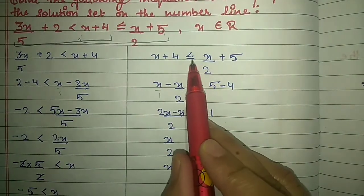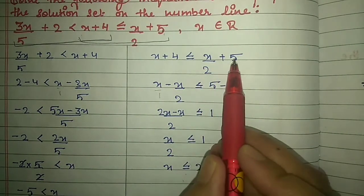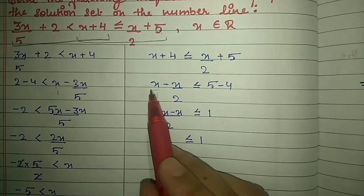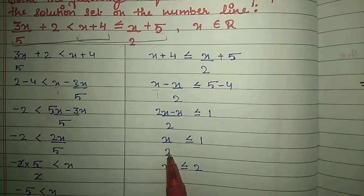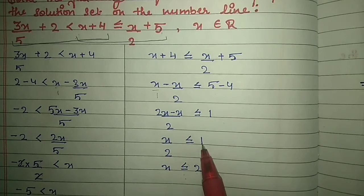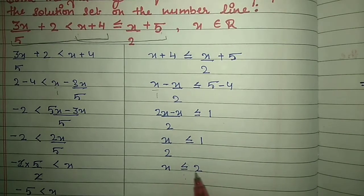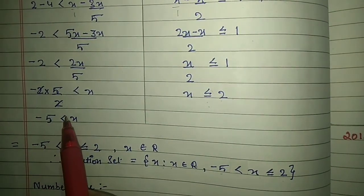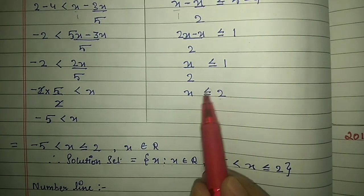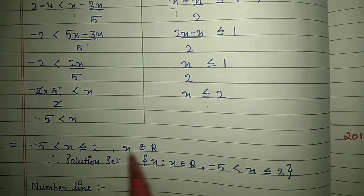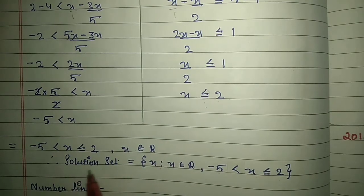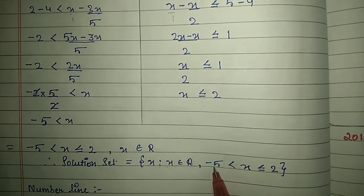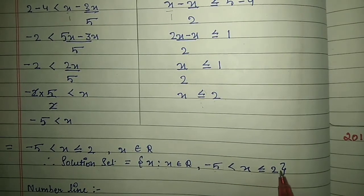Now take the second half: x + 4 ≤ x/2 + 5. Shift x/2 to the left and 4 to the right. x minus x/2 gives x/2 ≤ 1, or x ≤ 2. Joining both inequations: minus 5 < x ≤ 2, where x belongs to real numbers. Write your solution set as {x : x ∈ R, minus 5 < x ≤ 2}.